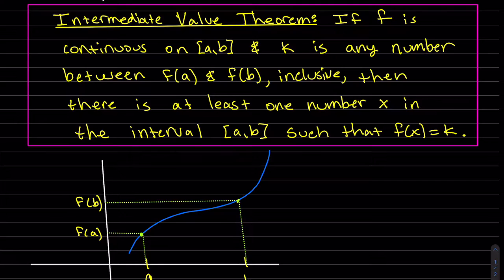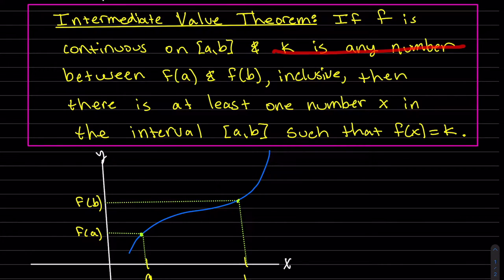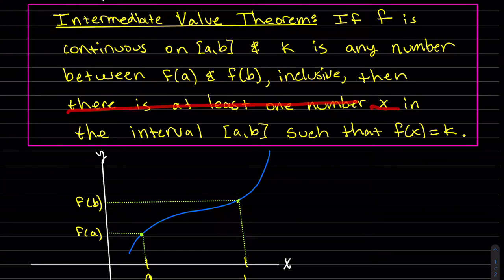So reiterating: if f is continuous on this interval — and the interval is an x interval, this is our x, this is our y — and k is any number between f(a) and f(b), inclusive, it could include one of them, then there is at least one number x in the interval such that f(x) equals k.